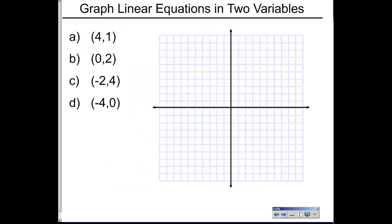Now we're going to graph points A, B, C, and D. For point A at (4, 1): x is the first column, y is the second column — the abscissa and the ordinate. So we have four one; we go over one, two, three, four, then up one. And this right here is point A.